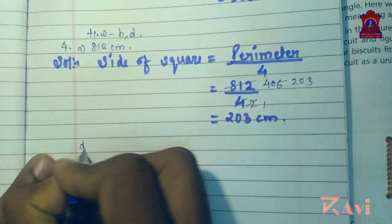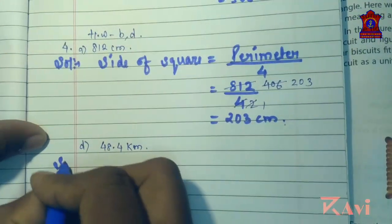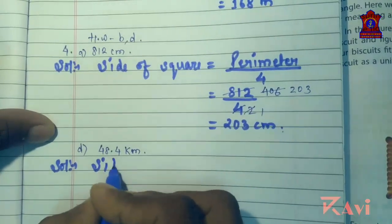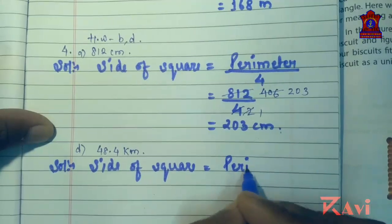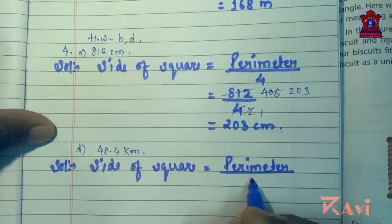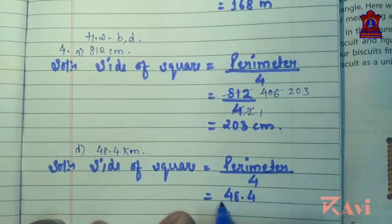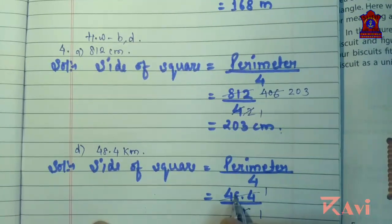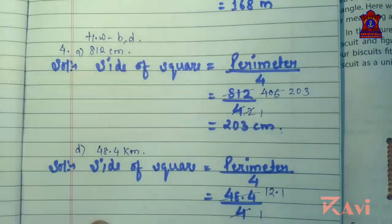Now let's do question D: the perimeter is 48.4 kilometers. Using the same formula, side of square equals perimeter divided by 4, that is 48.4 divided by 4. Dividing: 4 into 48.4 gives 12.1 kilometers.